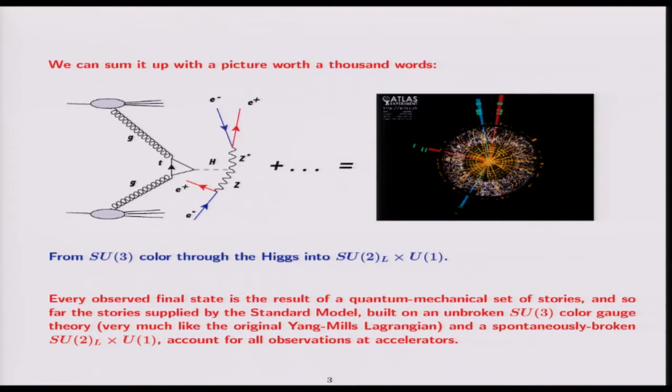We can sum up the triumph of gauge theories with a picture worth a thousand words. We see the gluons coming in, protons coming in on the far left. Inside the protons are gluons coupled through a top loop to Higgs. So SU(3) color through the Higgs goes to SU(2) left and U(1) right, and we see in this case the production of Z and Z* into four leptons.